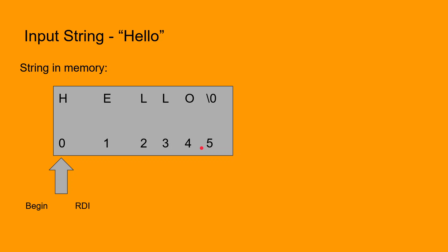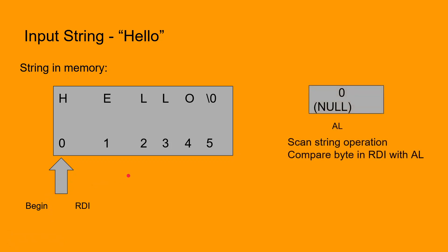We will start off by loading the RDI register with the address of the first byte of the string. We will also load the address of the first byte in another architectural register and call it the begin pointer. Once we have done that, we load the null byte into the AL register, since we want the scan string instruction to compare against the null byte.